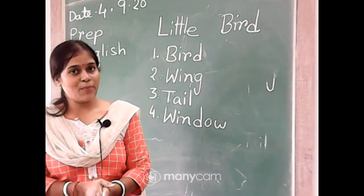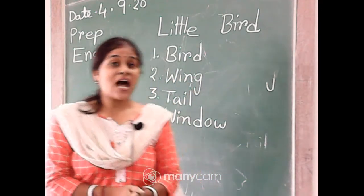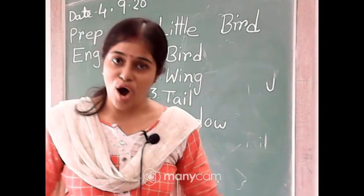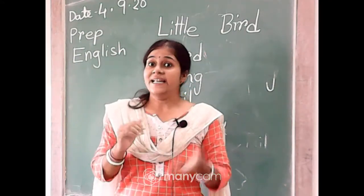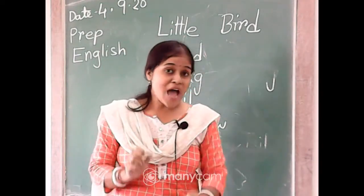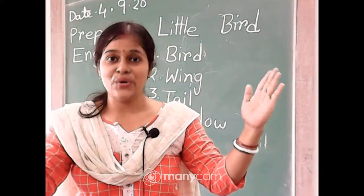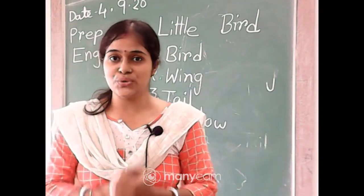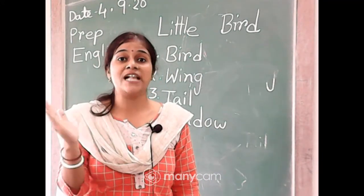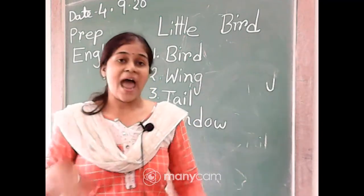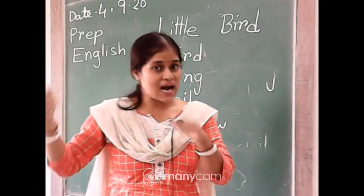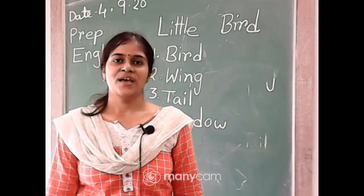Okay, again I am reading the poem — reading the rhyme. Once I saw a little bird come hop, hop, hop. I cried, little bird, will you stop, stop, stop. I was going to the window to say, how do you do? But he shook his tail — shook his tail. Shook means 'nana' — no. And away he flew.